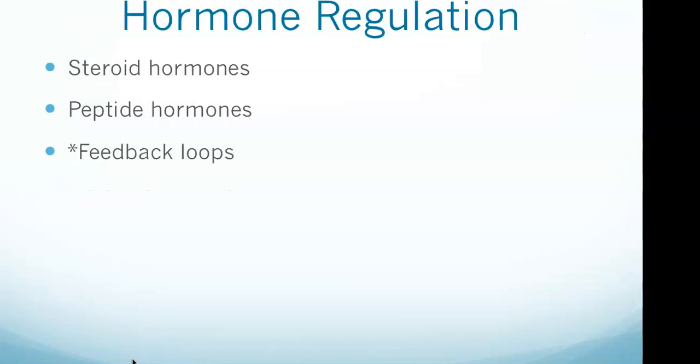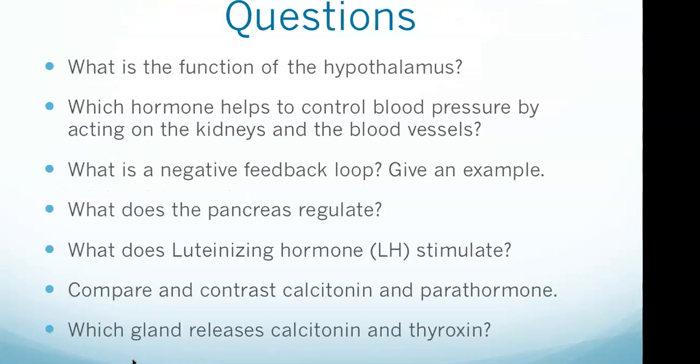Revisiting the feedback loop question: a negative feedback loop involves a response that counteracts a deviation from normal. An example is glucagon being released in response to low blood glucose, which then appropriately regulates the blood glucose level back to normal.